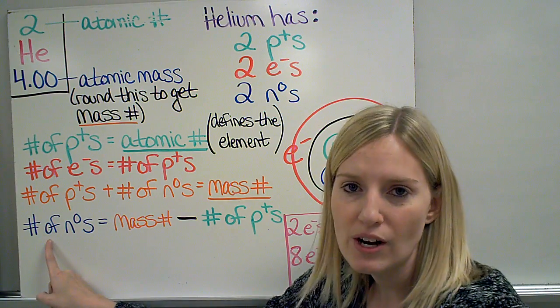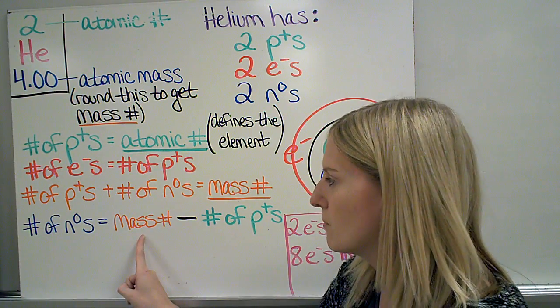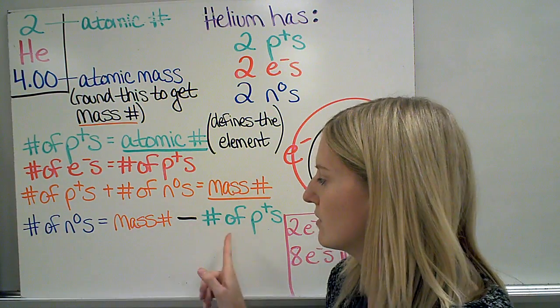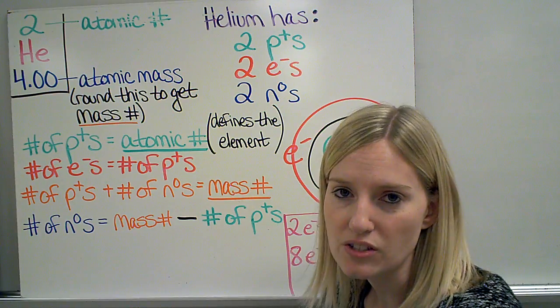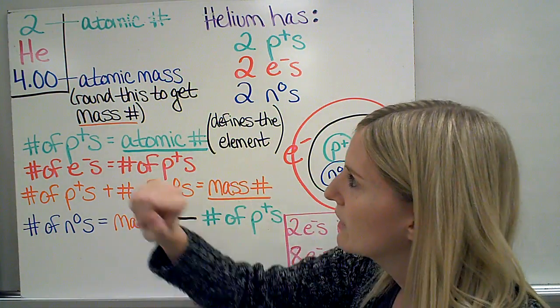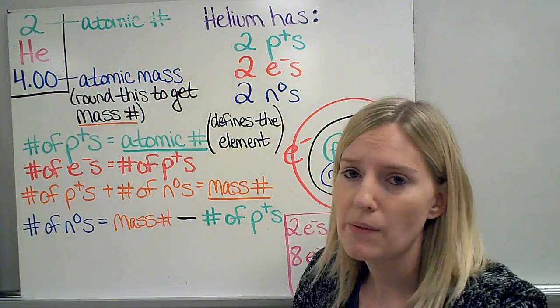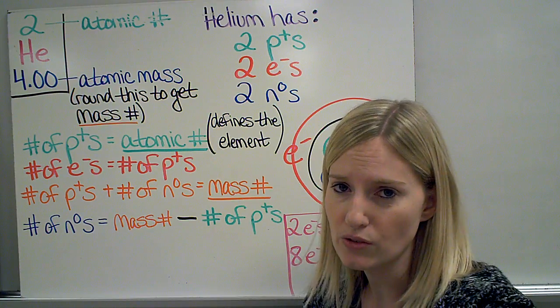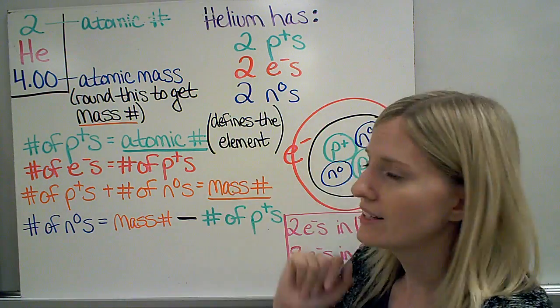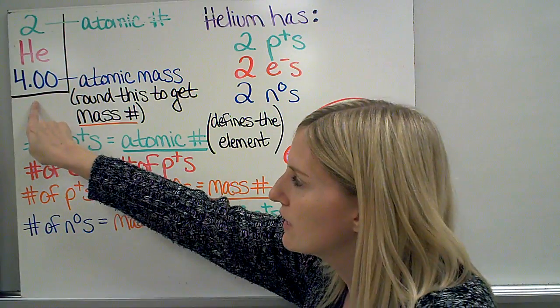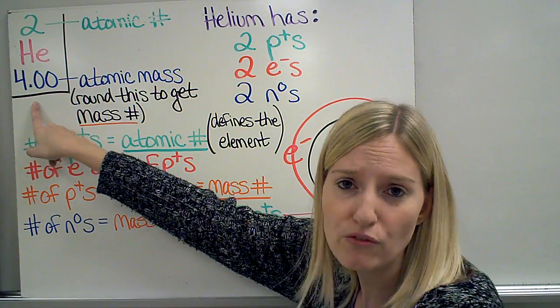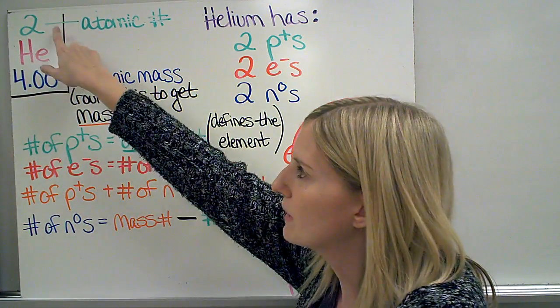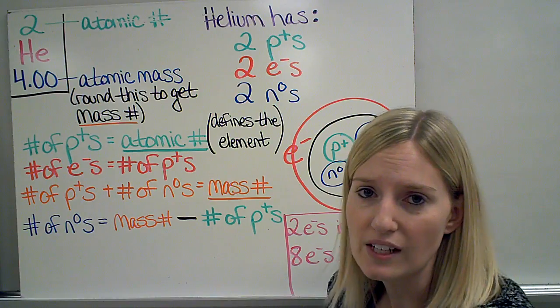To figure out how many neutrons there are on their own, I would take the mass number, because that's the protons and neutrons together, minus the protons. Take away the protons and you're left with just the neutrons. For helium, the atomic number is 2. So right away I know I have 2 protons and right away I know I have 2 electrons. No math needed for those 2. For the neutrons, however, I have to do a little math. I have to round this, which would just be 4, and I subtract how many protons I have from it. So 4 minus 2 gives me those 2 neutrons.